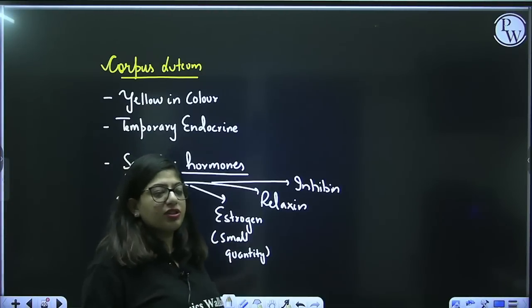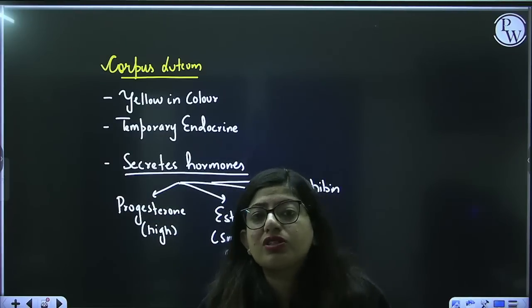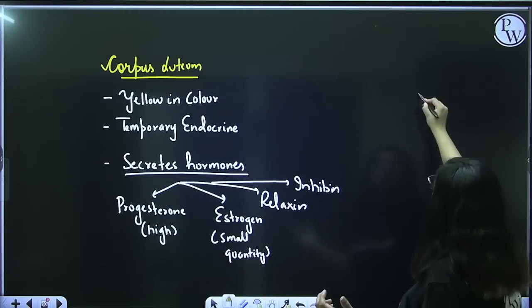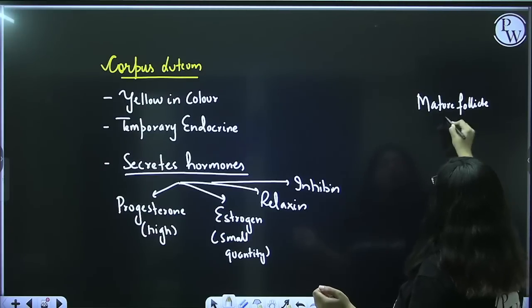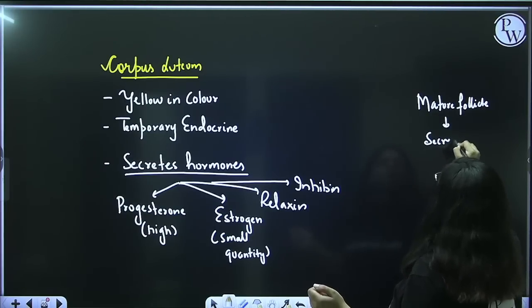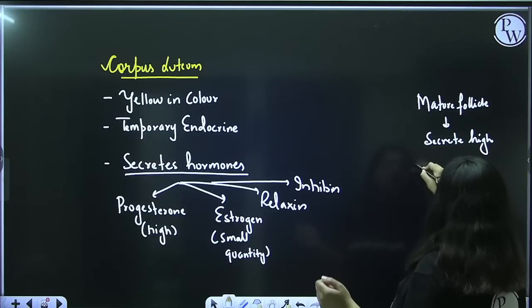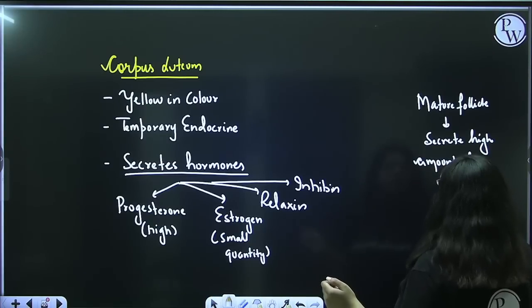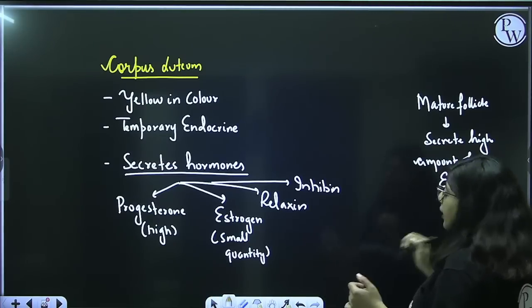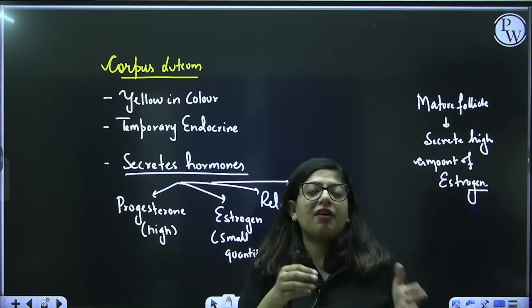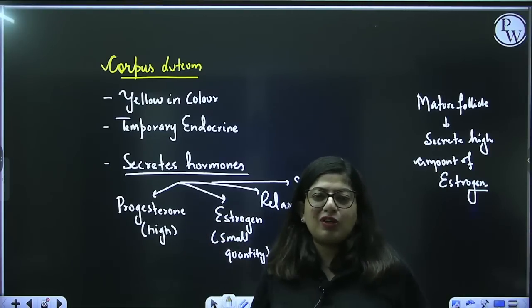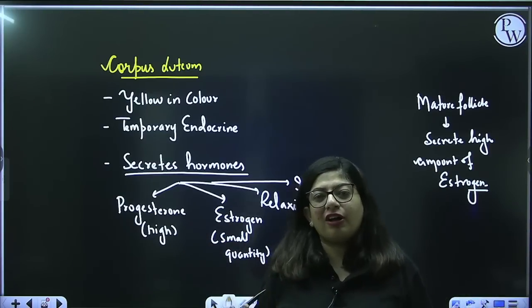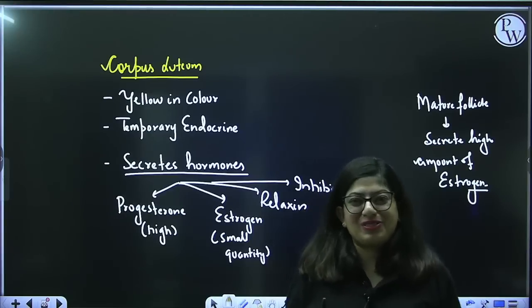If corpus luteum secretes only a small quantity of estrogen, then what is the main source of estrogen in a female's body? It is the mature follicle — the mature follicle secretes a high amount of estrogen. So, like in males we have testosterone, in females we have estrogen, progesterone, and a number of hormones — that's why females are very complicated, controlled by their hormones.